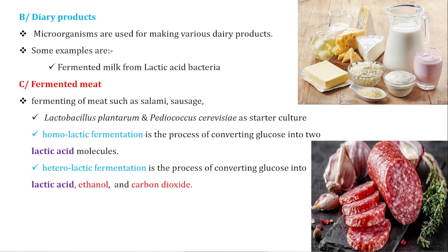Homo-lactic fermentation is the process of converting glucose into two molecules of lactic acid. Heterolactic fermentation is the process of converting glucose into lactic acid plus ethanol plus carbon dioxide produced.